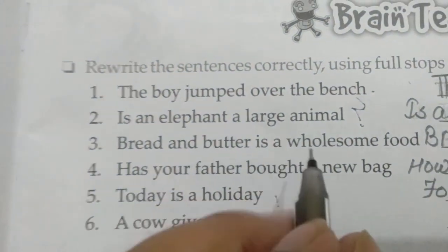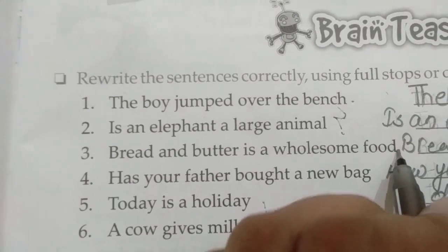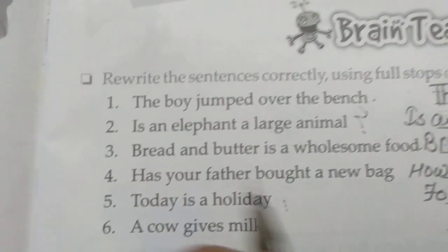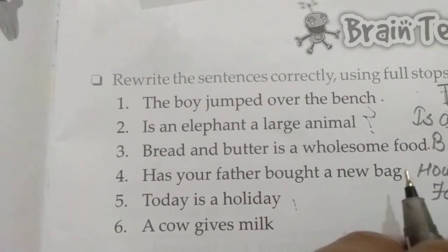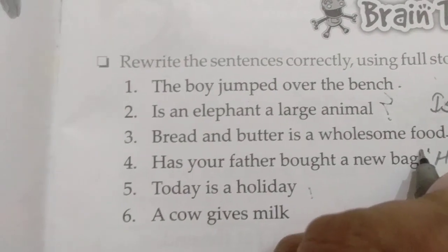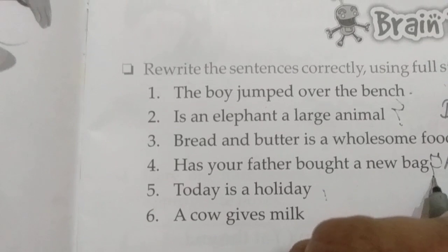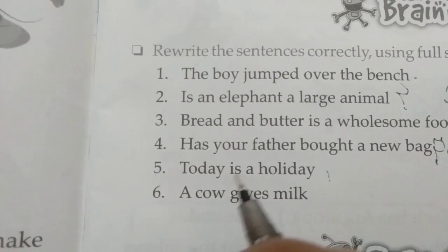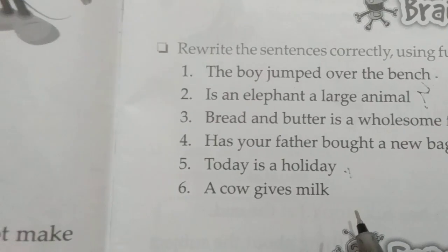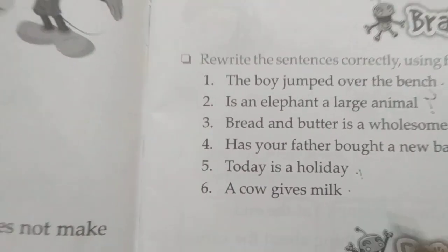'Bread and butter is a wholesome food.' — here we have a comma. 'Has your father brought a new bag?' — question mark, because sentences starting with 'have' or 'has' form a question. 'Today is a holiday.' — full stop. 'A cow gives milk.' — comma here.